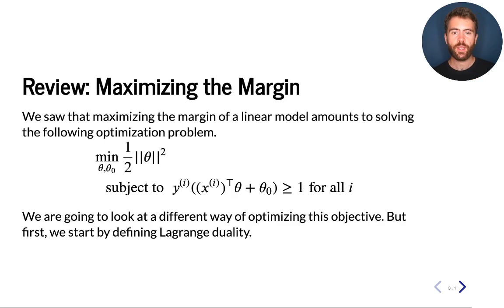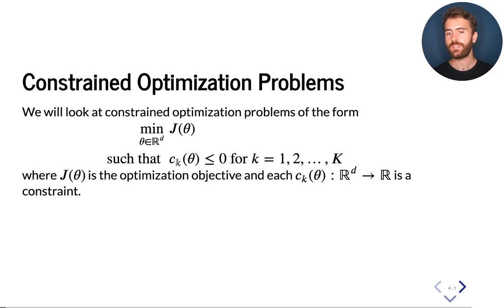Let's look at a general constraint optimization problem in which we are optimizing over some objective J under a set of constraints, which I'm denoting here by C_K. C is just some function from the space of theta that maps into the real numbers, and our constraint is that C_K is less than zero.